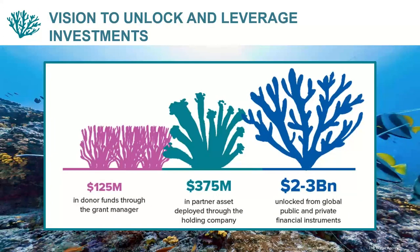The next slide shows the ambition of the fund — the idea is to have roughly a $500 million fund. We're still at the fundraising stage, so the money is not available right now. The goal is to have $125 million in philanthropy and concessionary funding that combines with about $375 million of private investment. That money, strategically invested through grants, concessional financing, and direct investment, will hopefully leverage another $2 to $3 billion from global public and private financial instruments.